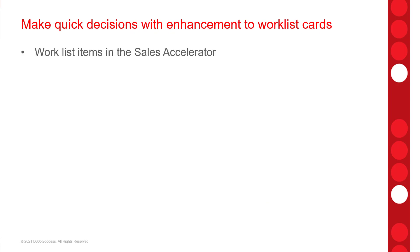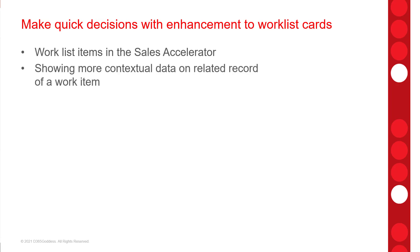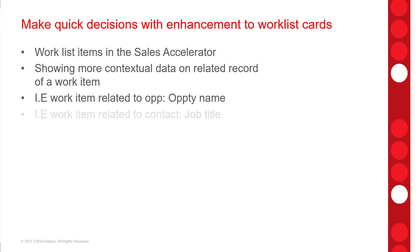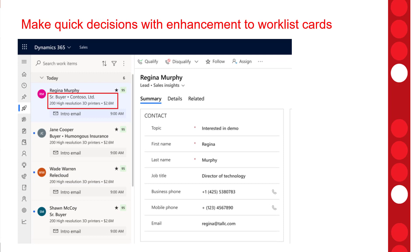This feature is related to the items in the work list of the sales accelerator and will show more contextual information about the related record of a work item. If you're looking at a work item related to an opportunity, you can see more information like the opportunity name. Similarly, if you're reviewing a work list item related to a contact record, you can see information like a job title field. You can see here on the left-hand side that card, which in this case is related to a lead, with additional information shown directly in the work item card.